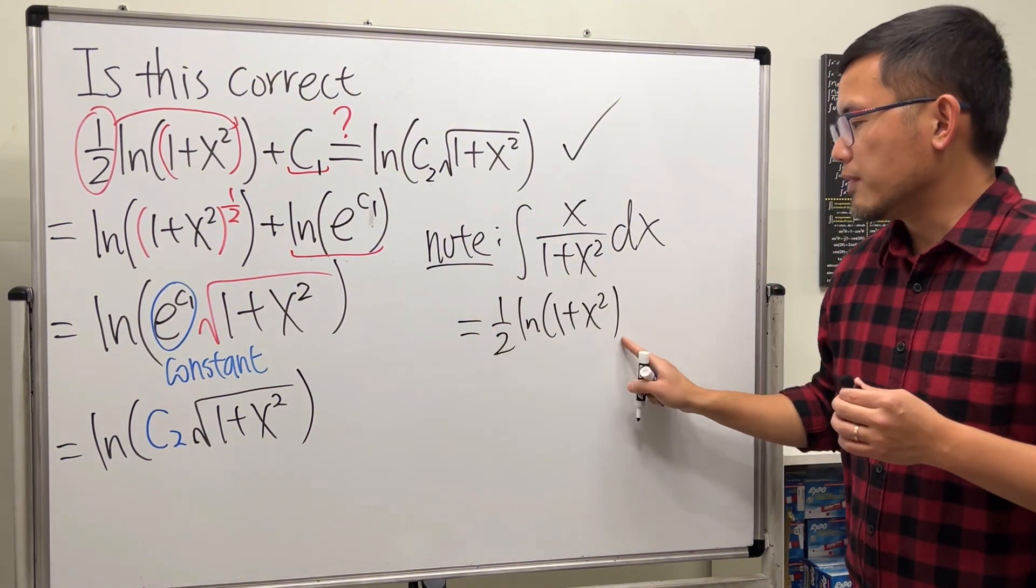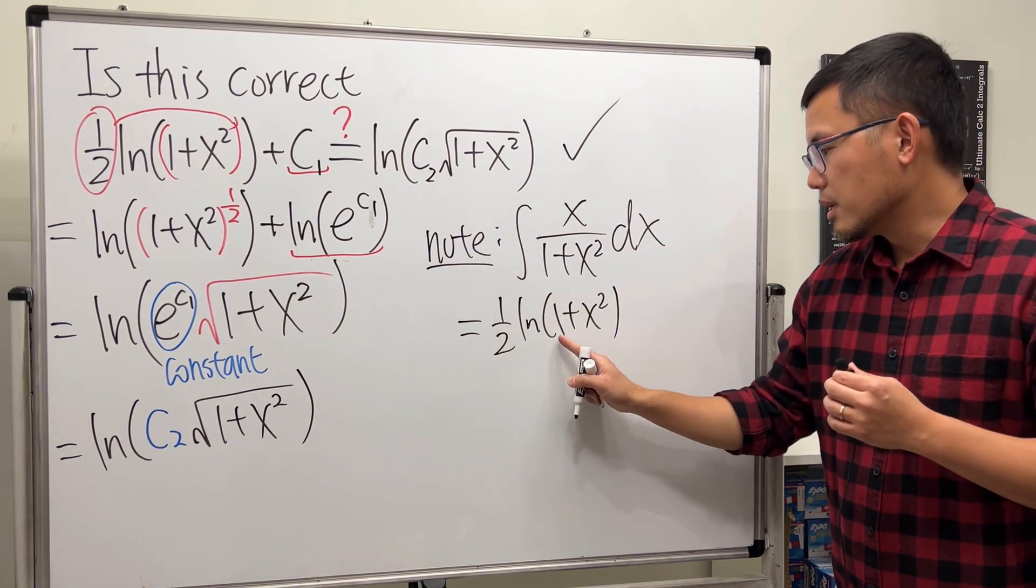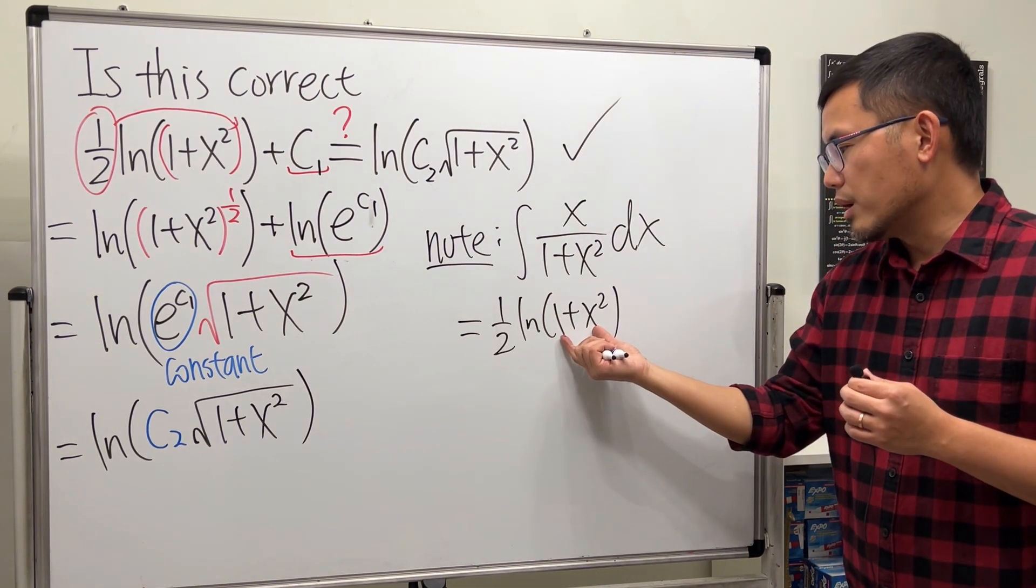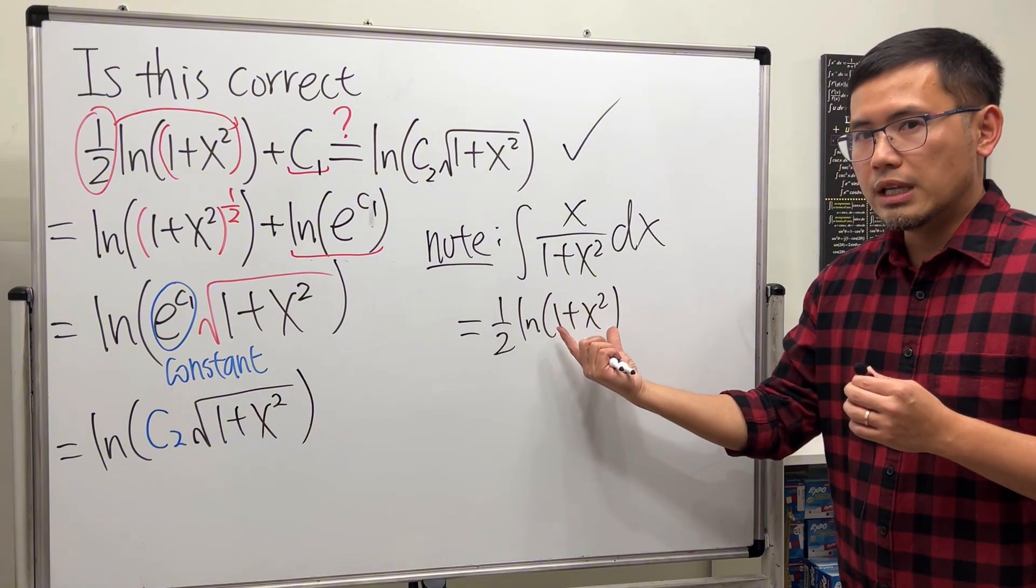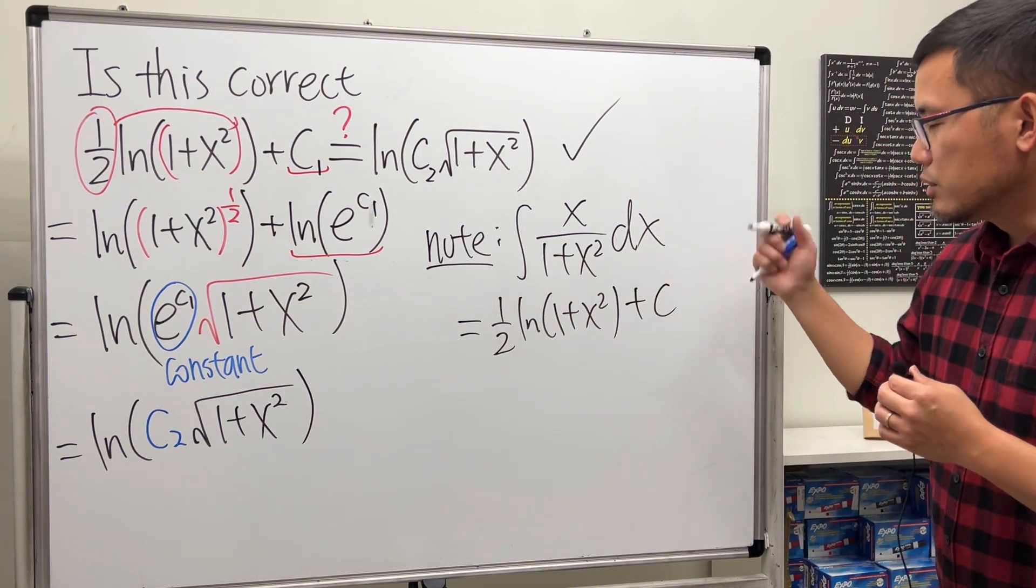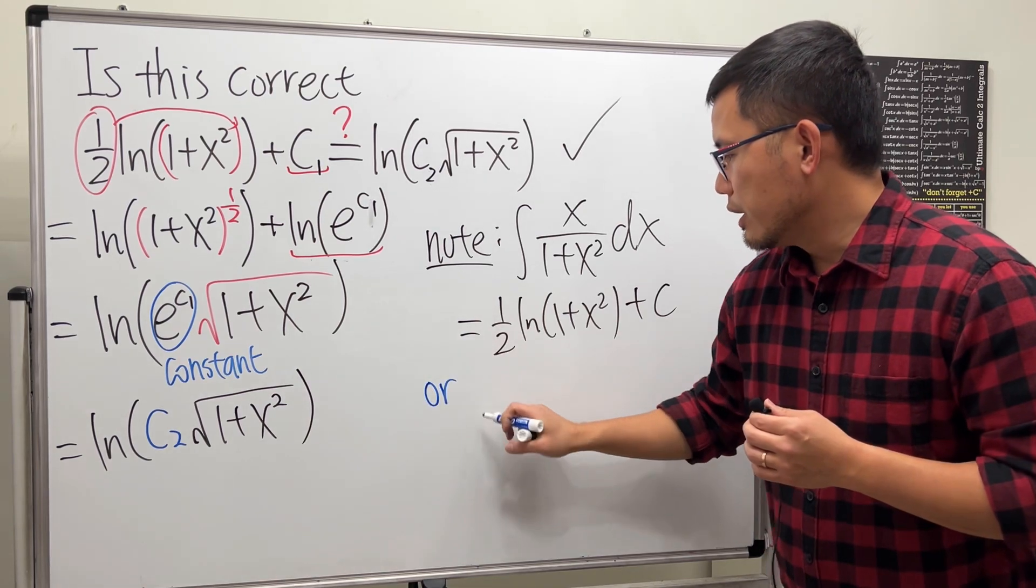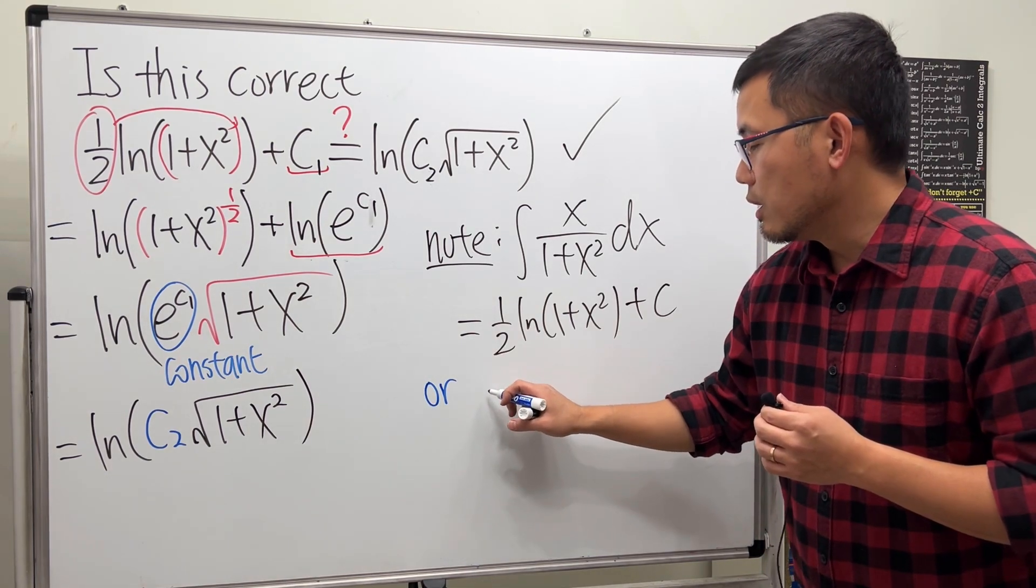So if you say the answer to this integral is one half ln of one plus x squared plus c, we don't need to use an absolute value because one plus x squared is always positive, so you don't need the absolute value. Now this is okay.